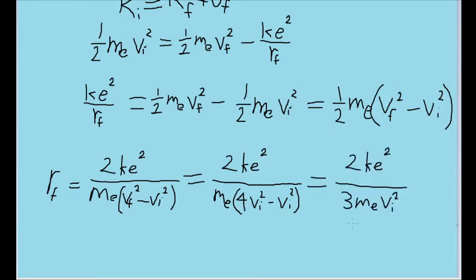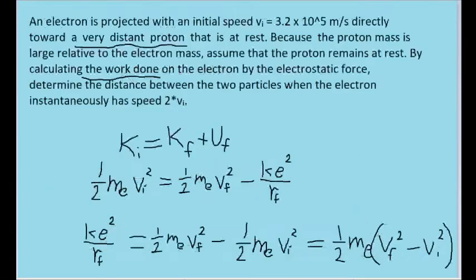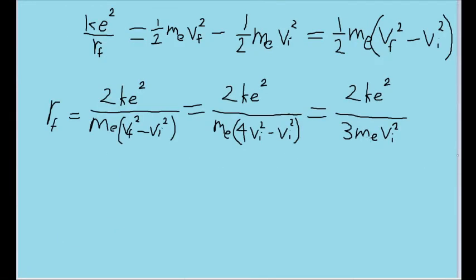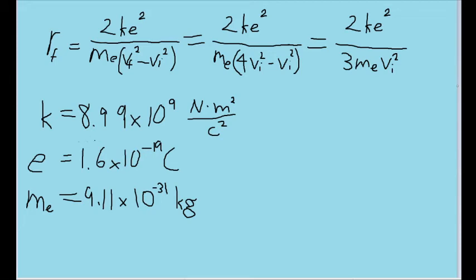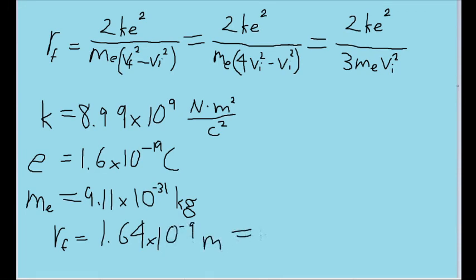This is probably as much as we can simplify it. Now let's just plug in our values: the initial speed, which is given to us by the problem, as well as the other constants we have. Here are the other constants we'll need: k, e, and the mass of the electron. Plugging these and the initial speed into our formula, we find that r final is equal to about 1.64 times 10 to the negative 9 meters, or about 1.64 nanometers.